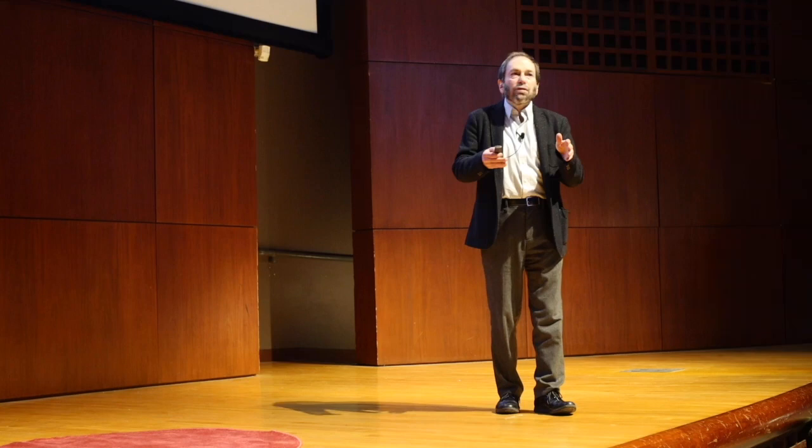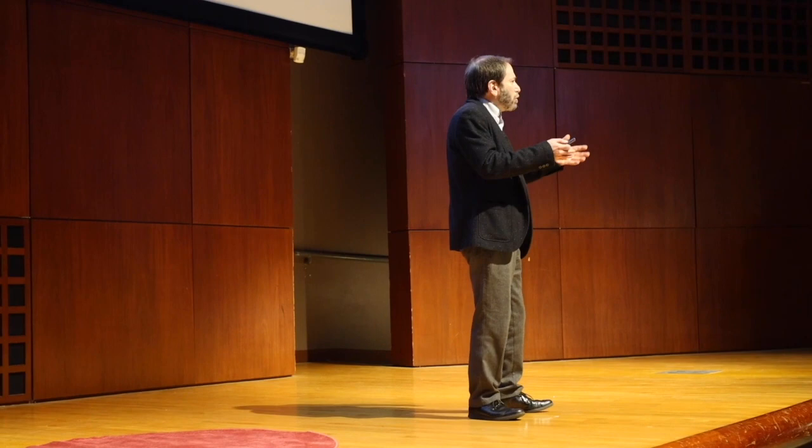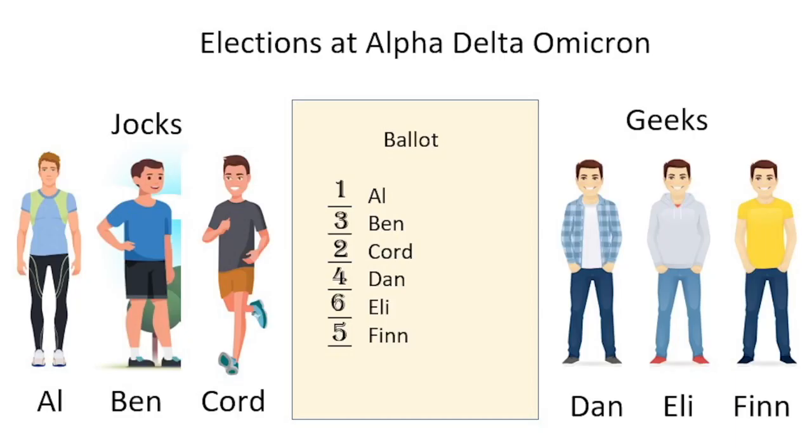We're used to the rules of a representative democracy where minority interests have a voice in proportion to the overall population. So we'd expect a two-to-one outcome — two jocks and one geek — in a fair election.